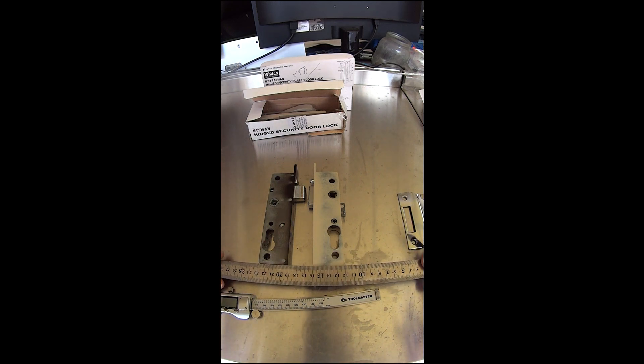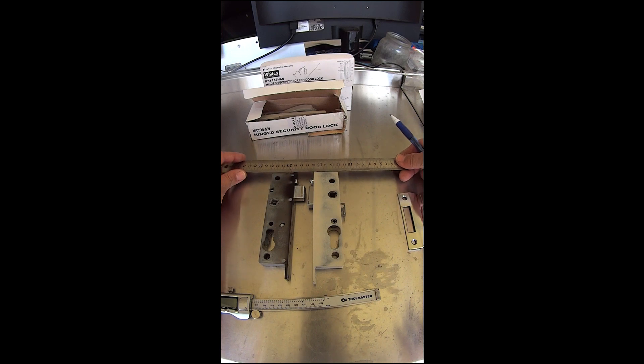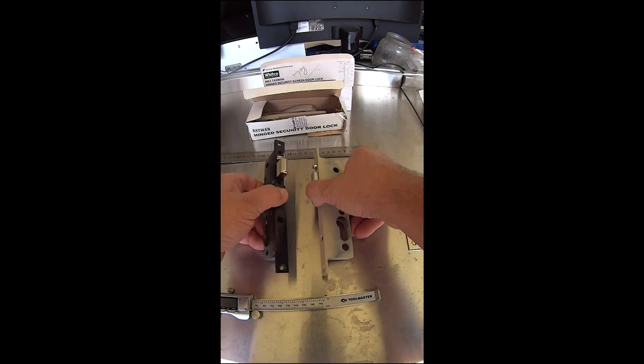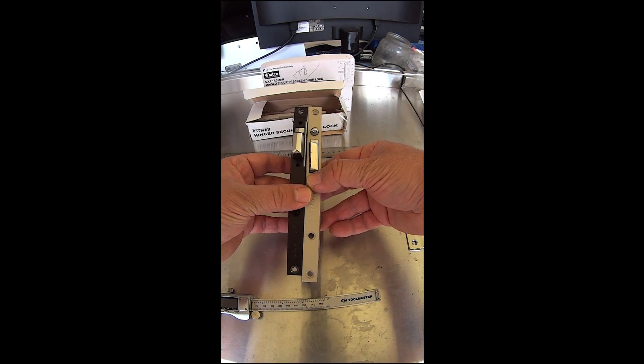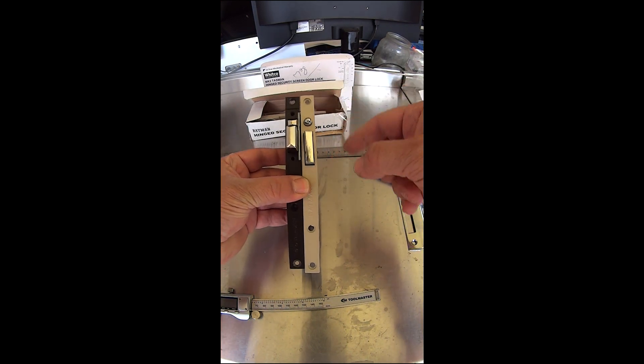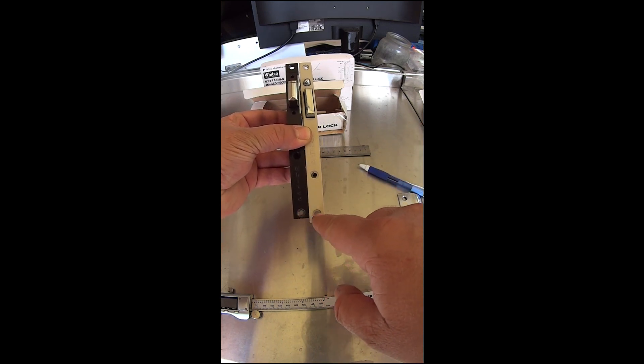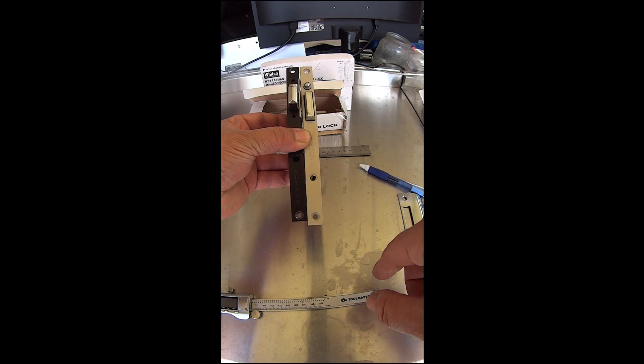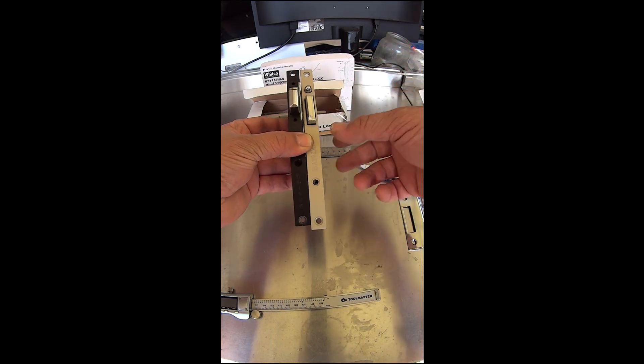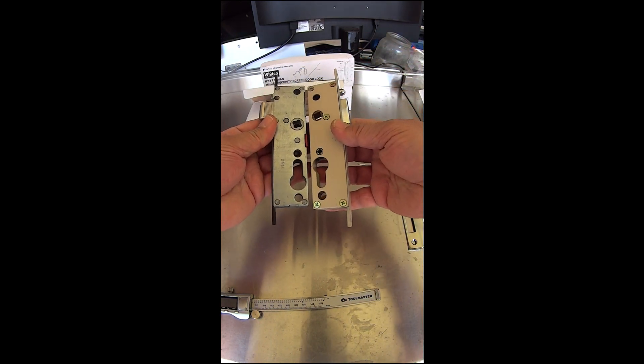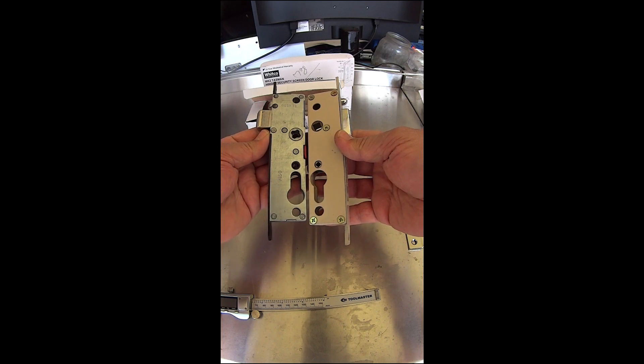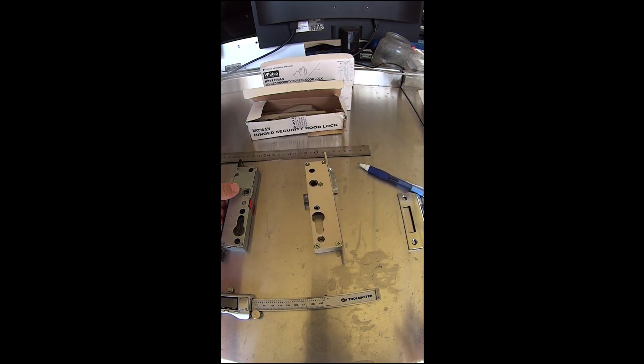Looking at the actual lock body there is a slight difference - it's about three millimeters difference. Putting these two locks together side by side, if you're lining up the top hole, you can see they're not exactly the same and the tongues are not exactly the same either.